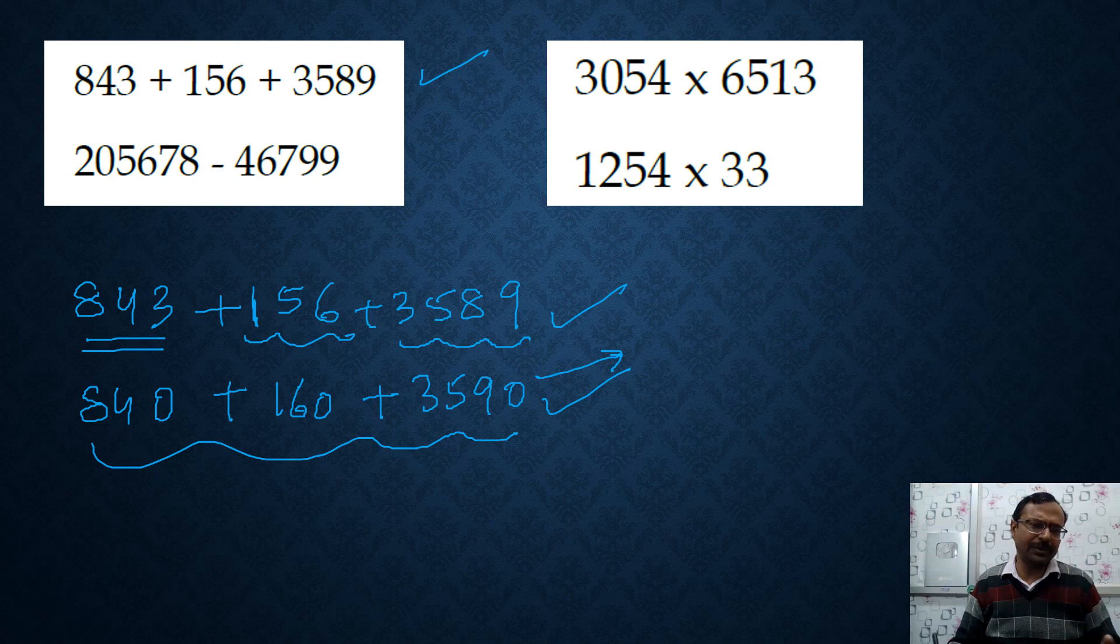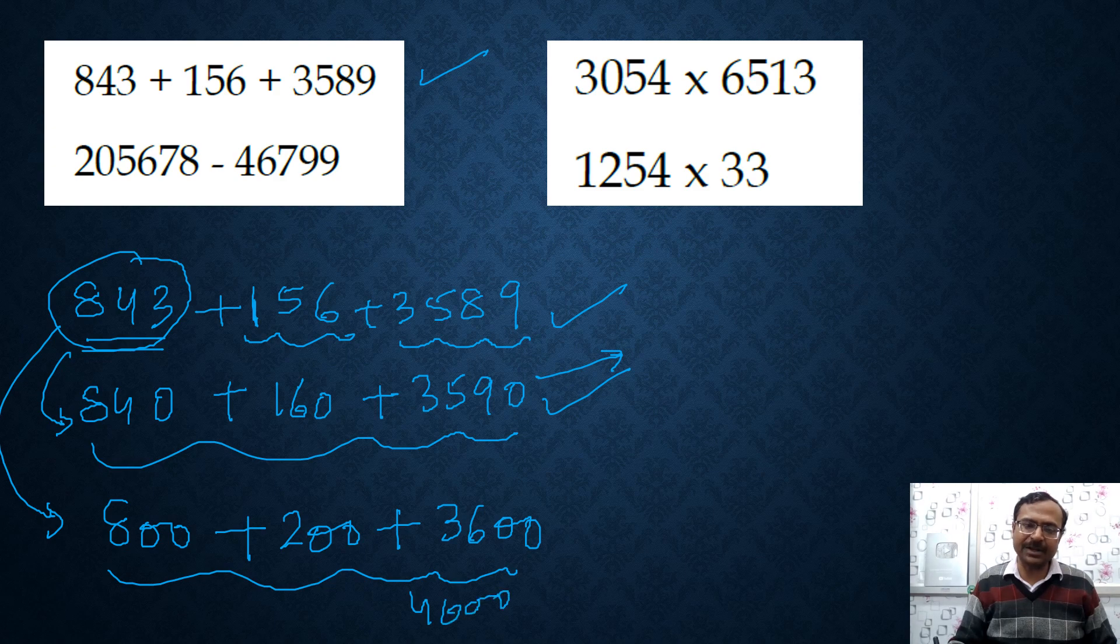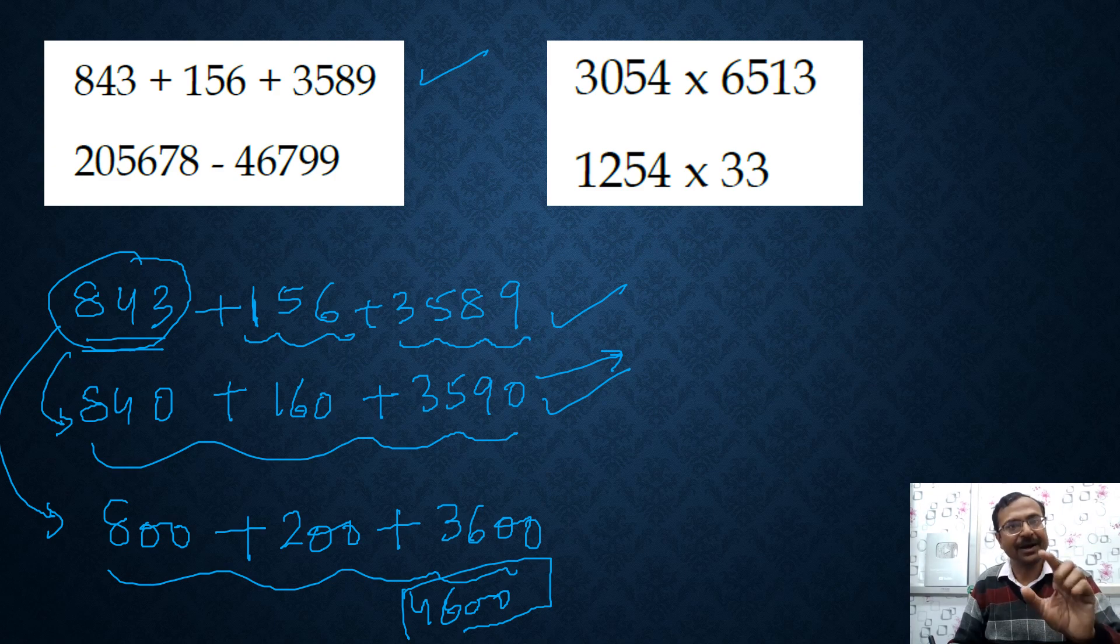Now let us round it off to nearest 100. So this is nearest 10 and now I am rounding it off to nearest 100. 843 is closer to 800 than to 900. 156 is closer to 200 than to 100 and 3589 is closer to 3600 as compared to 3500. So if you add these 36, 46, 4600 is the rough estimate of this sum when it is rounded off to nearest 100.